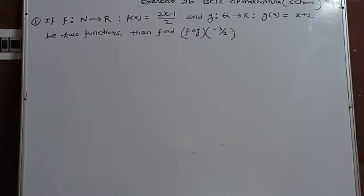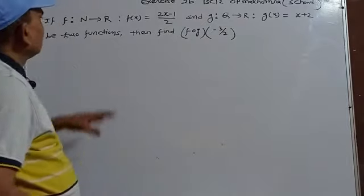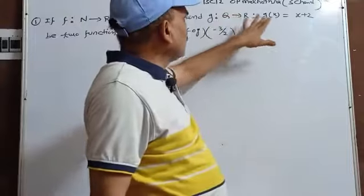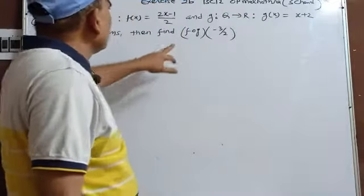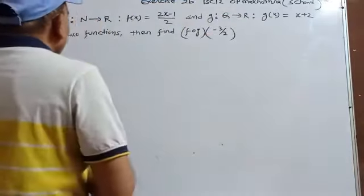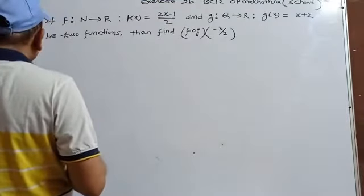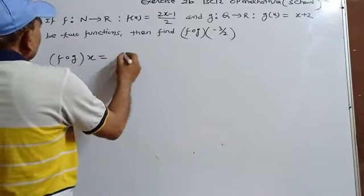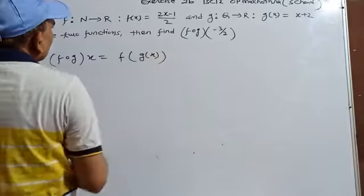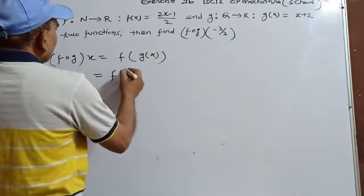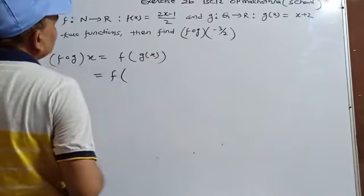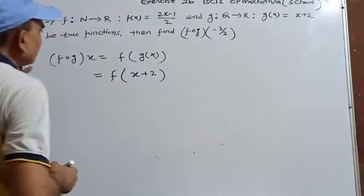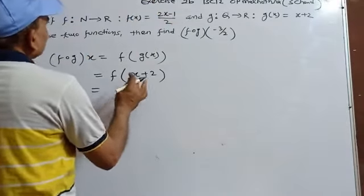First example: f is a function from N to R where f(x) = (2x-1)/2, and g is a function from Q to R where g(x) = x+2. We need to find fog(-3/2). So fog(x) = f(g(x)).